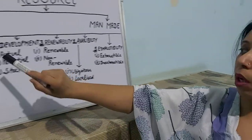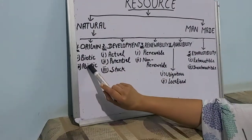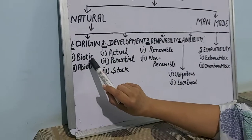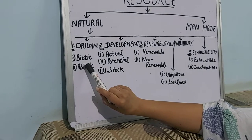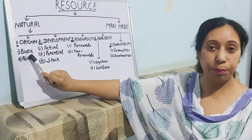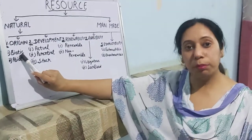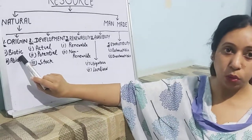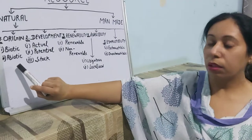On the basis of origin, natural resources are classified into two types: biotic and abiotic. Biotic means living things — those resources which are related to living things. For example, forests, animals, and microorganisms are all related to biotic resources.